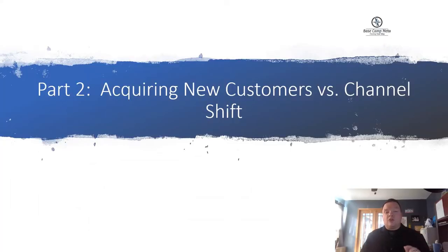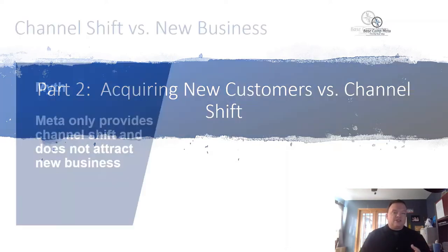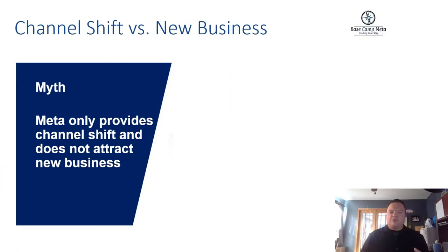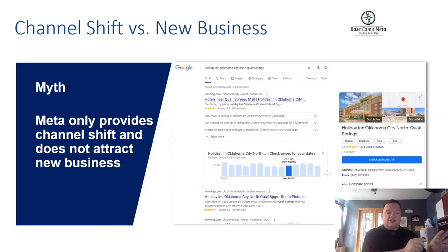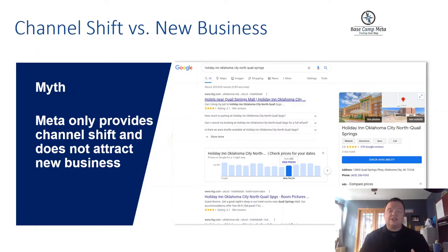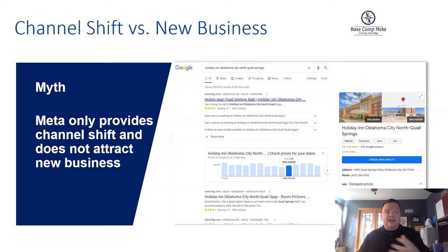Part two: acquiring new customers versus channel shift. When we think about MetaSearch, we often think it only provides channel shift and does not attract new business, because we're looking at a branded search scenario. Someone searched for a specific hotel and now it's a question of whether they book on your website or on one of the OTAs listed there. Naturally we want the direct booking — lower cost of sale and typically better conversion from OTAs. But channel shift isn't a bad thing by any means.